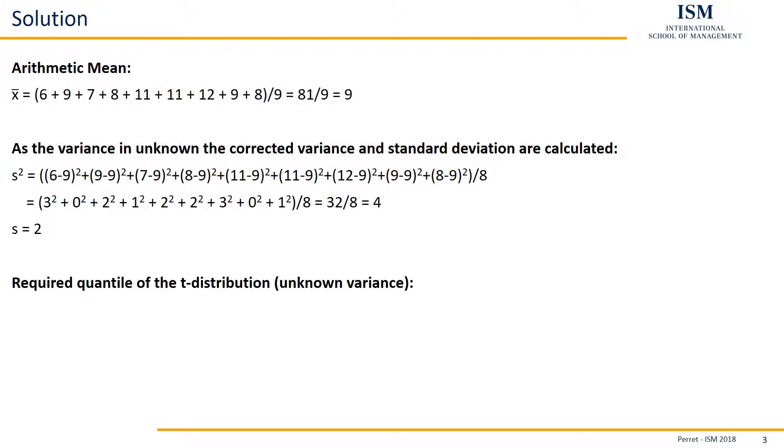The only thing left is the corresponding quantile of the t-distribution. We are using the t-distribution here, because on the one hand, we don't have any information on our variance, and on the other hand, we have less than 30 observations. If any of these two things would have been true, we could have used the z-distribution, meaning the normal distribution, instead.